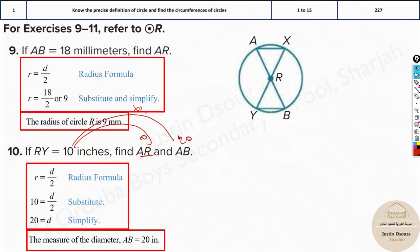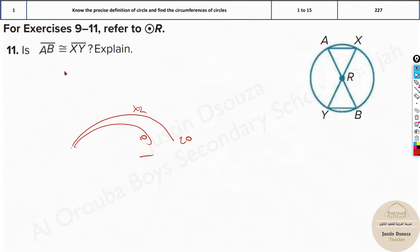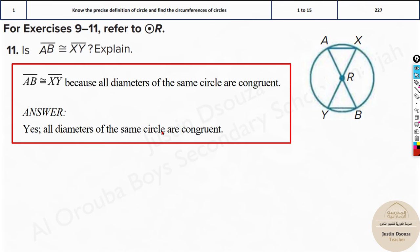Here, AB is 20, but you should also find AR, which is 10. Now, AB is congruent to XY. Let's say AB and XY, yes, they are congruent. That means they are equal. Why? Because they are diameters of a particular circle. All diameters of the same circle are congruent or equal.